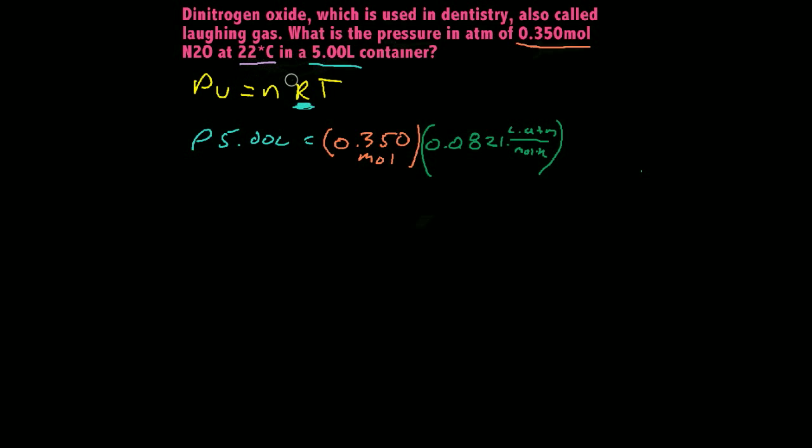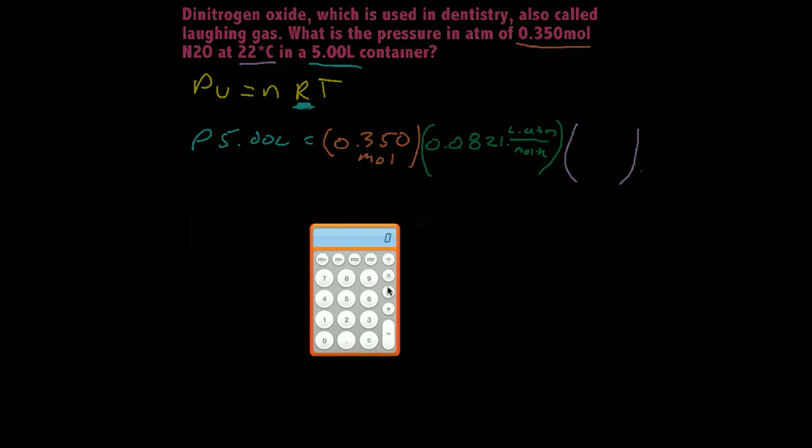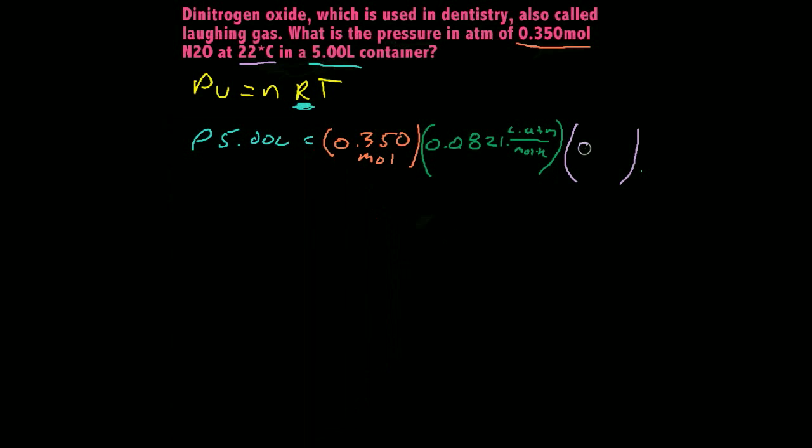Let's do the temperature, maybe in a purple. So this was our temperature. Only problem is it's in Celsius. If you remember, just like all the other gas laws, our temperature needs to be in Kelvin. So 22 degrees Celsius plus 273 equals 295 degrees Kelvin.